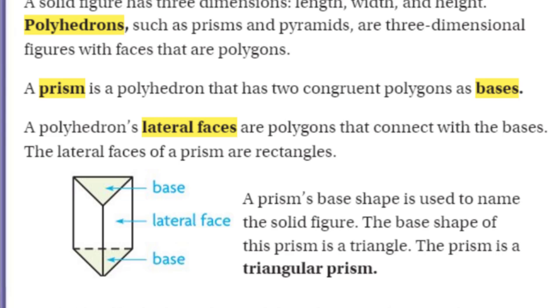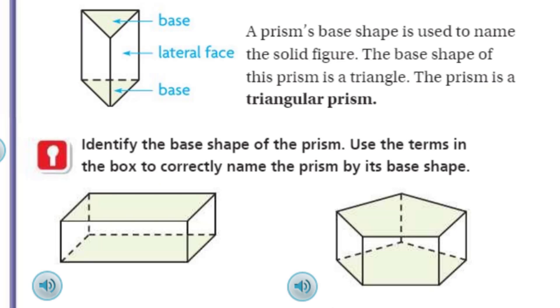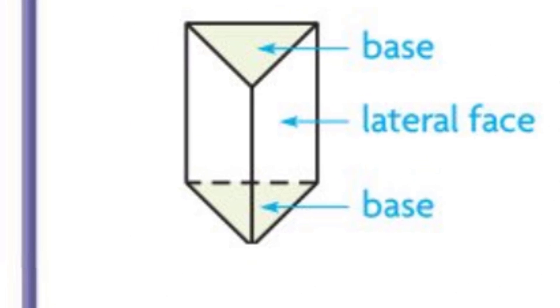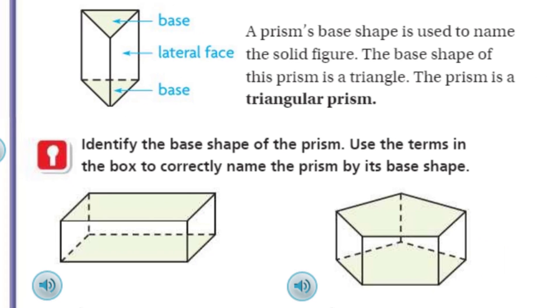A polyhedron's lateral faces are polygons that connect with the bases. The lateral faces of a prism are rectangles. Looking at our little picture here, can you give us a close-up? All right, I think you're hired! We have two bases—you can see the base on the top and on the bottom. Then we have the lateral face, which are made of polygons. You stick them together with the bases, and we have ourselves a 3D object. Now, a prism's base shape is used to name the solid figure. You can see that base there looks like a triangle. The base shape of this prism is a triangle, so the prism is a triangular prism. We have to change triangle to triangular because now it becomes an adjective. Triangle is a noun and triangular is an adjective. The base helps us name it.